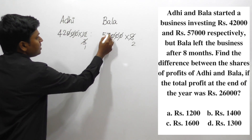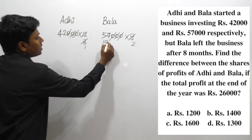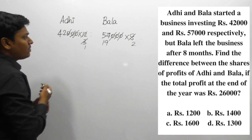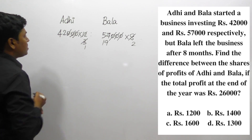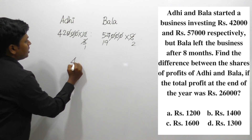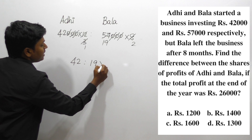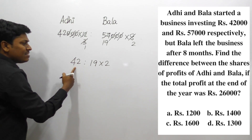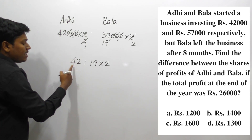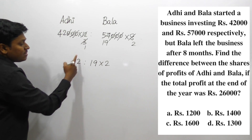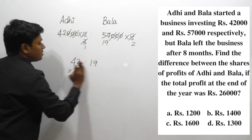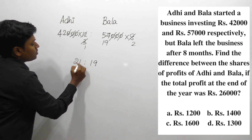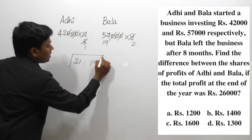After cancelling on the 3-table, the reminder gives 19 into 3 equals 57 for Bala's side. For Adhi's side, we have 19 into 2. We can cancel again on the 2-table, giving 21 on Adhi's side. So the final simplified ratio is 21 is to 19.